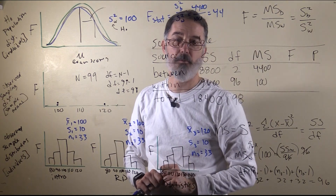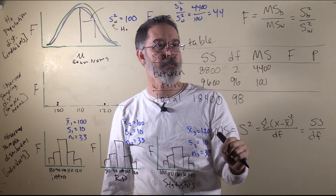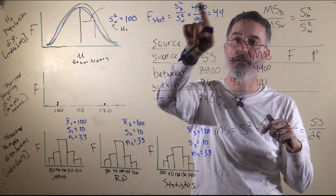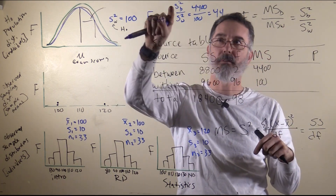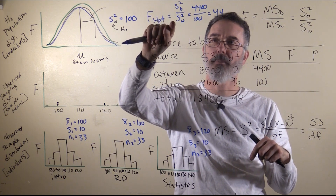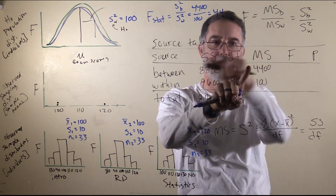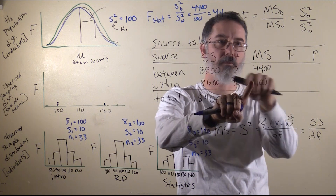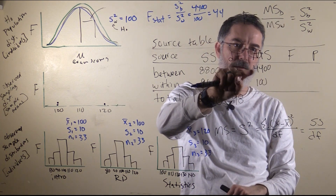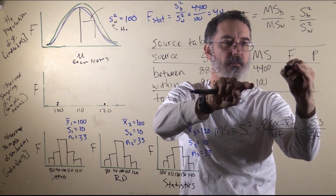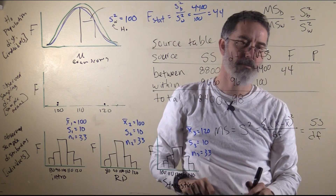The F statistic is really easy to calculate. We actually did it earlier, but if we have our source table, we do mean square between divided by mean square within — because they are the same as variances. So it is 4,400 divided by 100, and our F is going to be 44, which is exactly what we got earlier.